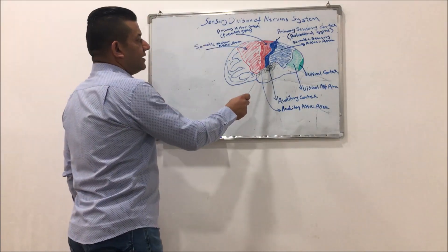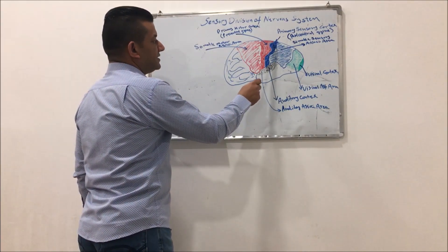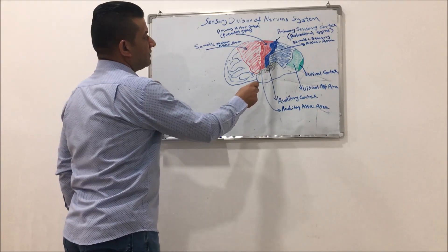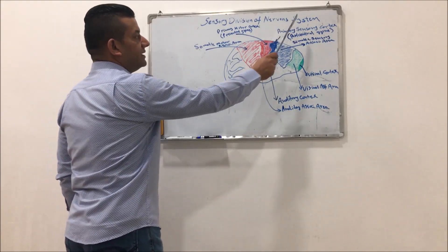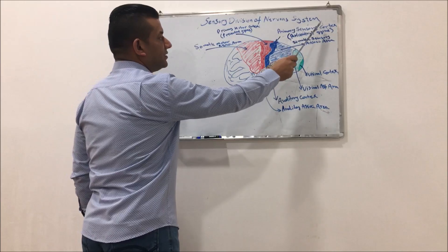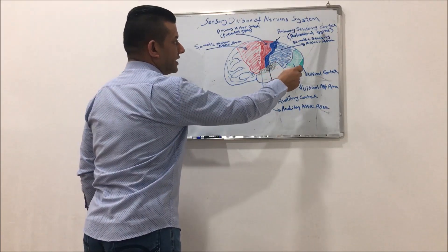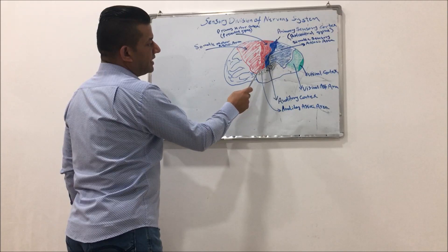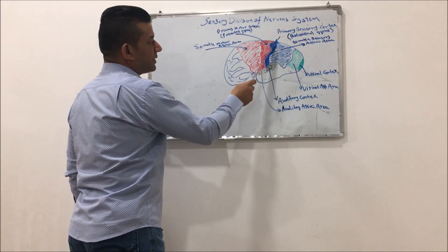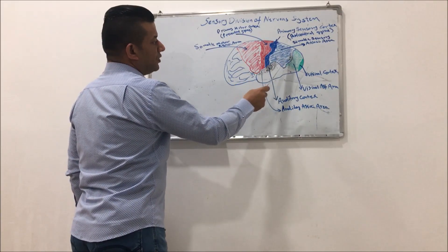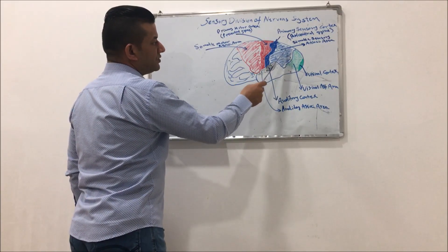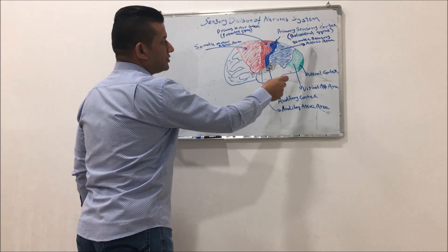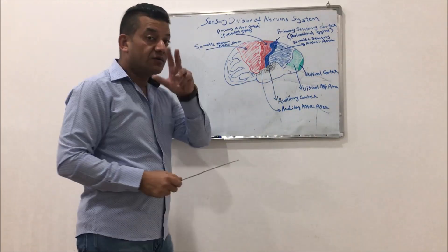The area highlighted in blue color is called the primary sensory cortex, or post-central gyrus. Adjacent to the primary sensory cortex, we are going to see the somatic sensory association area.